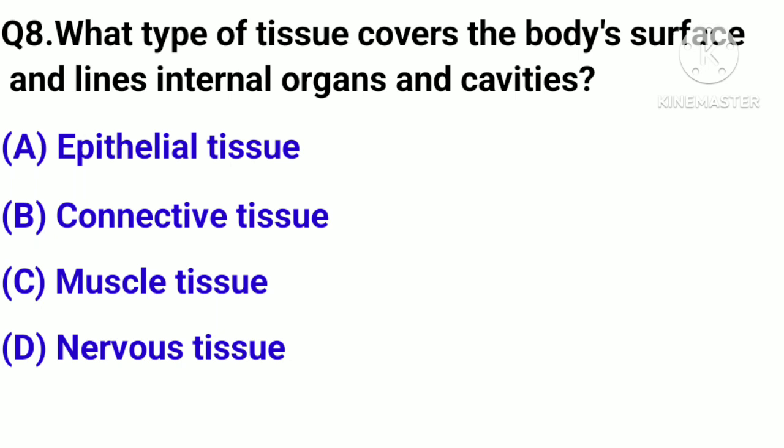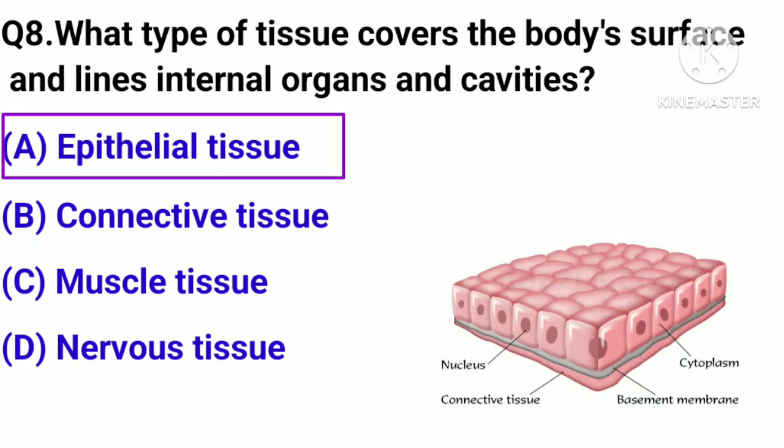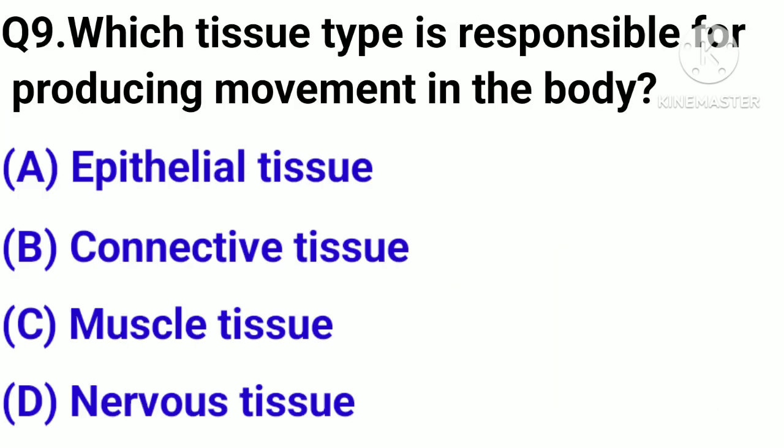Question number 8. What type of tissue covers the body's surface and lines internal organs and cavities? Option A: Epithelial tissue. B: Connective tissue. C: Muscle tissue. D: Nervous tissue. Correct answer: Option A, Epithelial tissue.